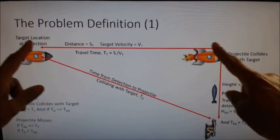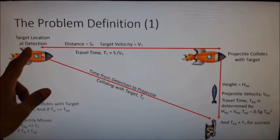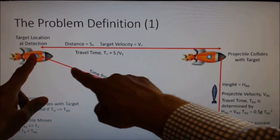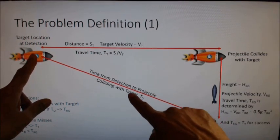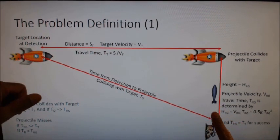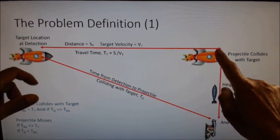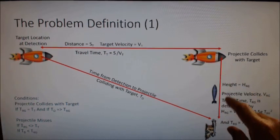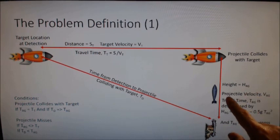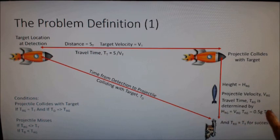This is a simplified illustration of what happens when a ship's guns detect a target. This is the target at the point of detection. So there's a time taken from detection to projectile colliding, TD. And this is our railgun, and it fires a projectile towards the anticipated location of the target. And that time it travels a height, H railgun RG, and the projectile velocity is VRG. The time taken to reach this anticipated position is TRG and is determined by the standard velocity acceleration formula.